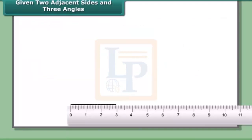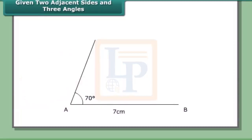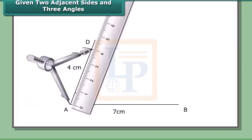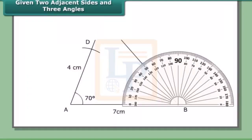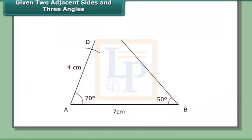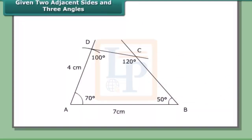Step 1: Draw line segment AB = 7 cm. At A, draw an angle of 70° using a protractor. With A as center and radius 4 cm, cut an arc on the line to locate D. At B, draw an angle of 50°. At D, draw an angle of 100° with a protractor. Let the arms of these angles meet at C. ABCD is the required quadrilateral.